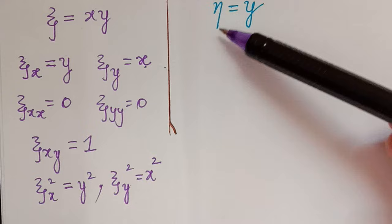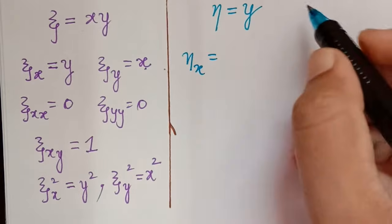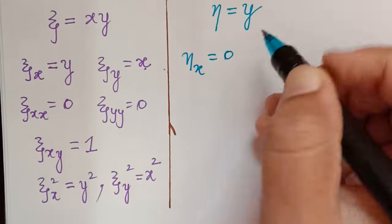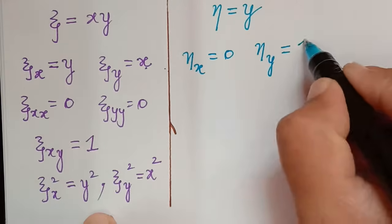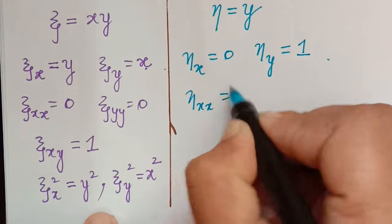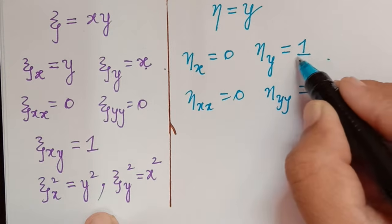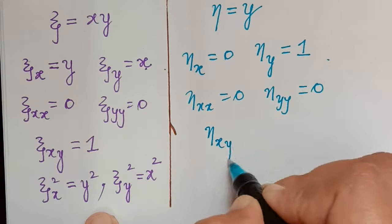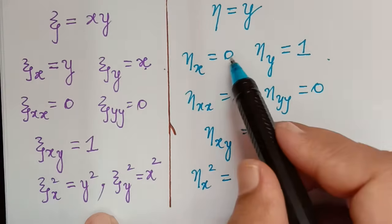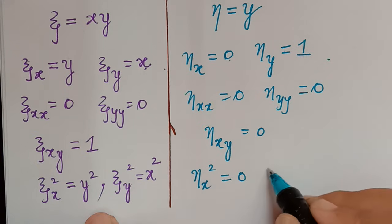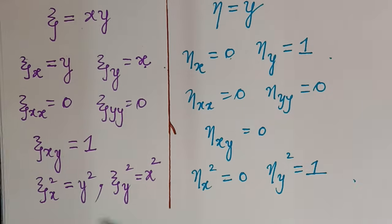Similarly, for η = y: η_x = 0, η_y = 1, η_xx = 0, η_yy = 0, η_xy = 0, η_x² = 0, η_y² = 1. Now we substitute all these into the formulas.